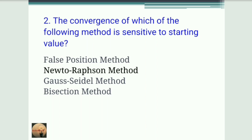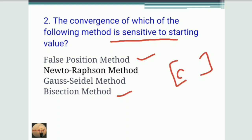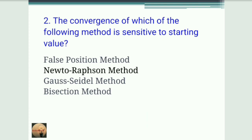The second question: convergence of which method is sensitive to the starting value? The false position method and bisection method both work on a bracketing range of a and b, but the Newton-Raphson method works on a single value x₀ and is sensitive to whether you start with a correct approximate root.